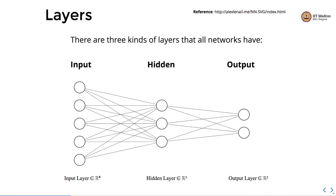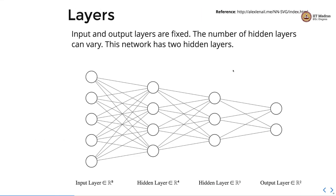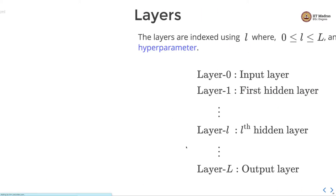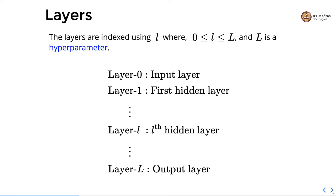To understand how the forward pass works, we need to study three components: layers, weights and biases, and activation functions. There are three kinds of layers: the input layer, the hidden layer, and the output layer. Input and output layers are fixed; the number of hidden layers can vary. The network shown here has two hidden layers — the first hidden layer has four neurons and the second has three neurons. Layers are indexed using L, where L goes from 0 to capital L (a hyperparameter representing the number of layers). Layer 0 is always the input layer and layer L is the output layer, with multiple hidden layers in between.